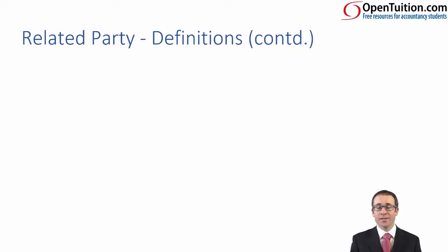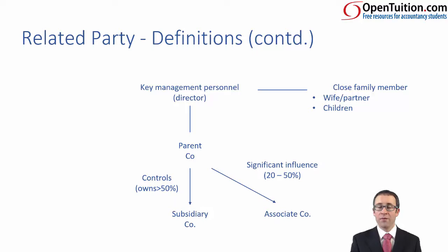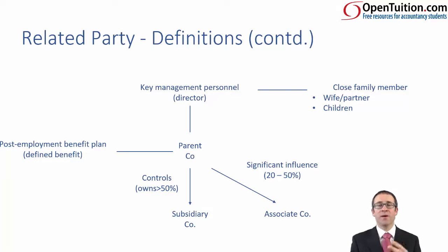Taking our group structure of parent, subsidiary and associate and keeping it simple — other related parties of the group would be key management personnel. Any directors of the parent are related parties. Any close family members of the director are a related party of the group. Also, if you have a defined benefit pension scheme, there is a separate company pension pot, and that pension scheme is a related party. Any transactions between the company or group and the scheme will need to be disclosed.